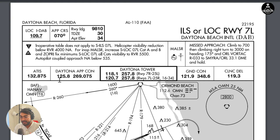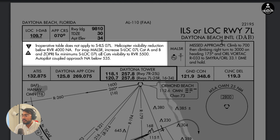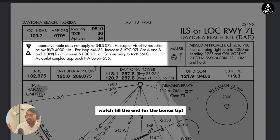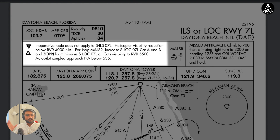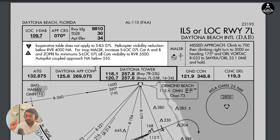When does this table not apply? The table does not apply when the approach plate itself specifically states so — for example, 'inoperative table does not apply to straight-in ILS 7 Left' at Daytona Beach International Airport. A lot of times students in a checkride forget to read this. If given the scenario 'MALSR is inoperative on ILS 7 Left in Daytona, what do you do?' the student starts calculating with the inoperative components table, only to realize the answer was right in front of them in the notes. So read the notes.